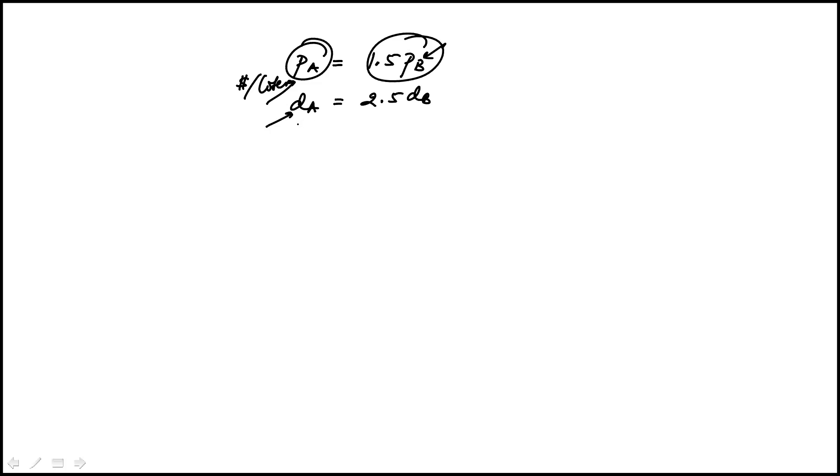So the cost per kilometer driven for A would be PA over DA, whereas for B would be PB over DB. You'll notice I have these quantities in terms of B, so I can replace those.